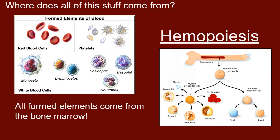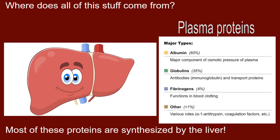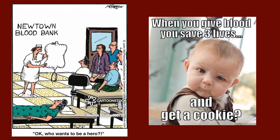Red blood cells, platelets, and white blood cells are collectively referred to as formed elements, and they originate from stem cells inside our red bone marrow. The process of forming red blood cells and white blood cells is referred to as hemopoiesis. In addition to these formed elements, we have plasma proteins that free-float in our blood and have a dynamic impact on whether water moves into our tissues or into our blood — important for regulating blood volume and overall blood pressure. Most of these plasma proteins come from the liver.